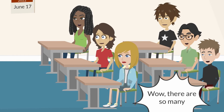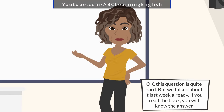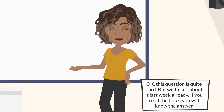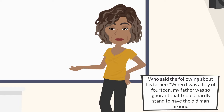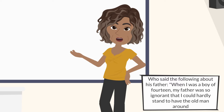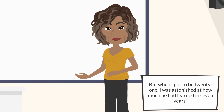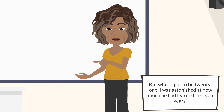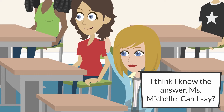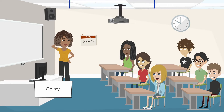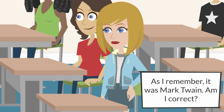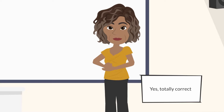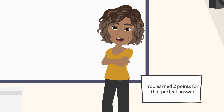Wow, there are so many. Ready for the next question? This question is quite hard, but we talked about it last week already. If you read the book, you will know the answer. Who said the following about his father? 'When I was a boy of 14, my father was so ignorant that I could hardly stand to have the old man around. But when I got to be 21, I was astonished at how much he had learned in 7 years.' Only Anna can answer. Okay Anna, what is your answer? As I remember, it was Mark Twain. Am I correct? Yes, totally correct. You earned 2 points for that perfect answer.